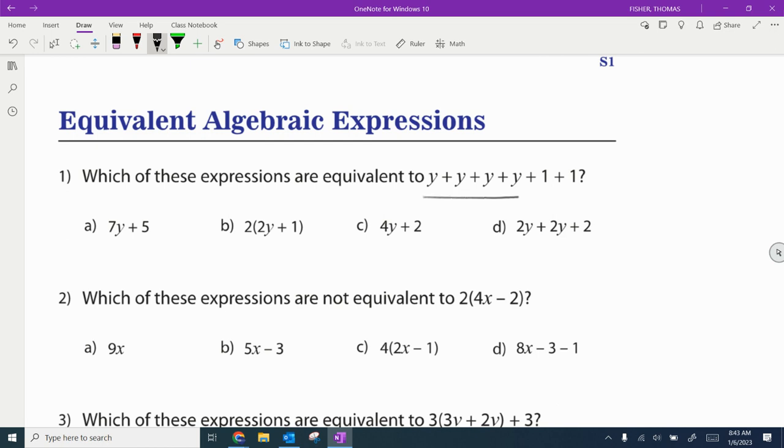So in this first problem, we've got four y's, which we can just call 4y. And then we've got 1 plus 1, which is just 2. So we've got 4y and 2, which means there should be a plus sign in between those two, 4y plus 2. So obviously not A. We've got it right here as C.